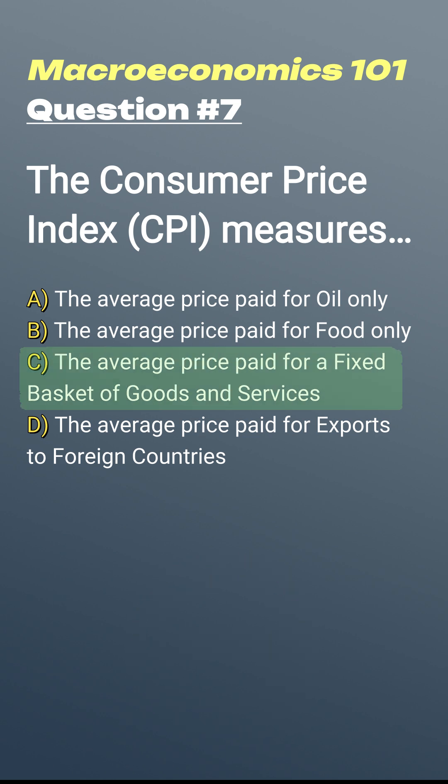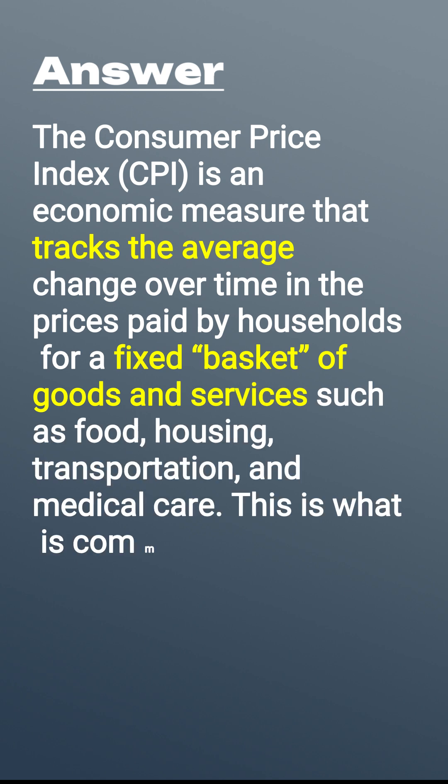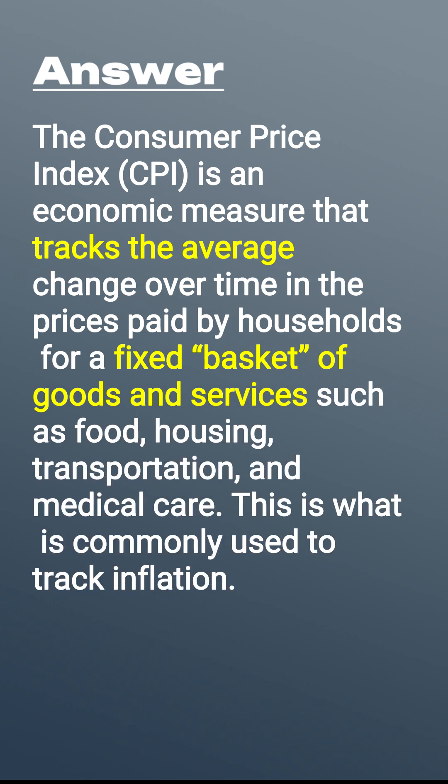The answer is C: the average price paid for a fixed basket of goods and services. The Consumer Price Index, CPI, is an economic measure that tracks the average change over time in the prices paid by households for a fixed basket of goods and services, such as food, housing, transportation, and medical care.